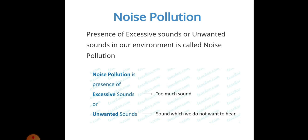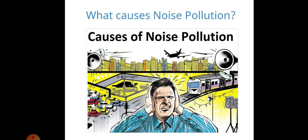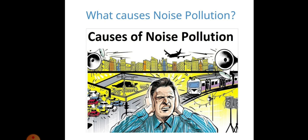What causes noise pollution? You can see in the picture here — there are speakers, vehicles, train sound, loudspeakers and mics, and buildings in a junction area where more sound is produced. These are the causes of noise pollution. The first cause is motor vehicles on road. When you are standing in a traffic queue, motor vehicles produce a lot of noise due to horns and the sound of their engines.